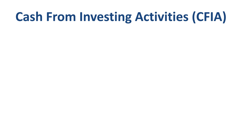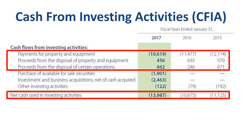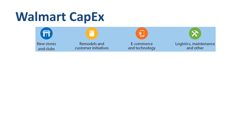Moving to cash from investing activities — a net cash outflow of $14 billion in 2017. In most years this category consists mainly of three items: the cash outflow for payments for property and equipment, and cash inflows from proceeds on disposal of property, equipment, or certain operations. The first line is what is often called capex spending, or capital expenditures. Walmart has four capex categories: new stores and clubs, remodels and customer initiatives, e-commerce and technology, and logistics and maintenance. Only a few years ago, new stores and clubs accounted for almost half of capex spending.